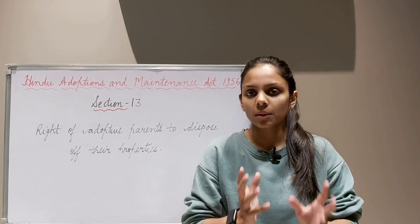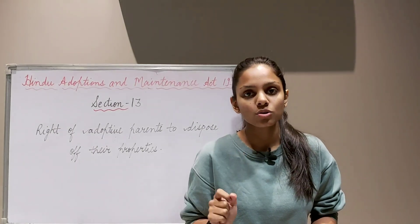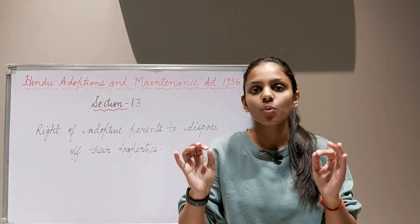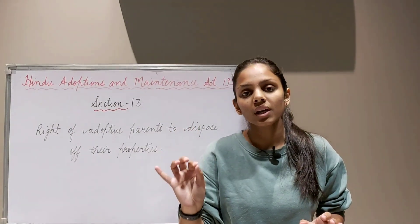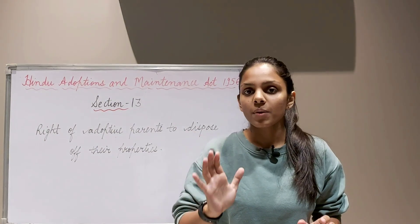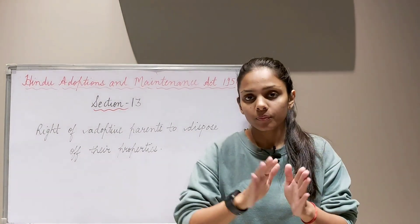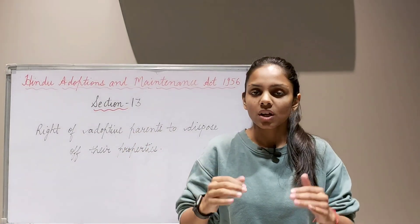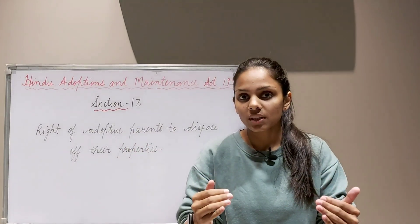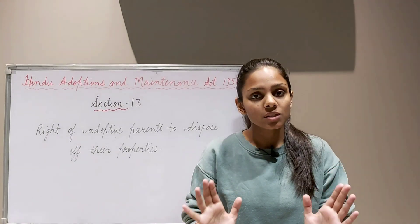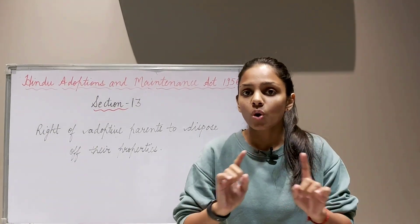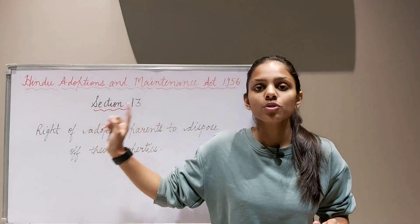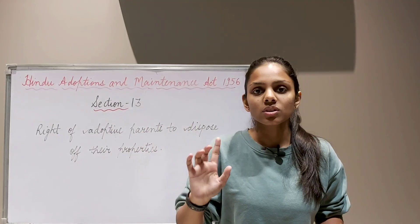Section 13, if I explain in simple terms: adoptive parents — both adoptive father and mother — have the right to dispose of or alienate their property in any way they like. If adoptive parents want their property to not go to their natural born children or adopted child after their demise, they can dispose of it in any way they like. Adoption is no bar to their right of disposing of their property.